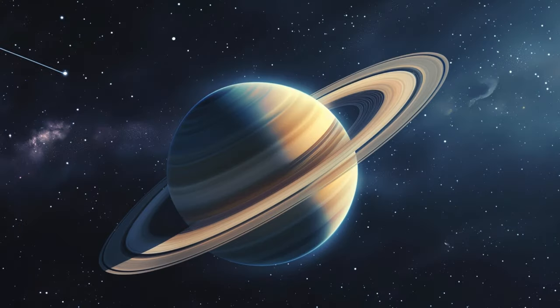Hello Saturn. Saturn is famous for its beautiful rings made up of ice and rock. These rings are not solid, but are made of countless smaller objects. Just like Jupiter, Saturn also has a lot of moons.